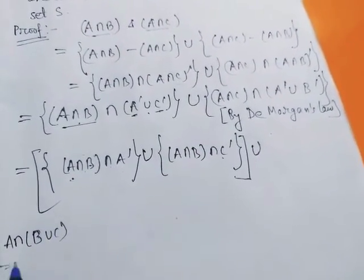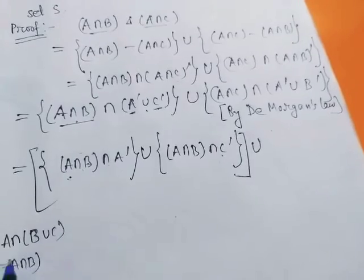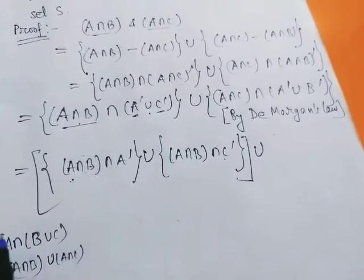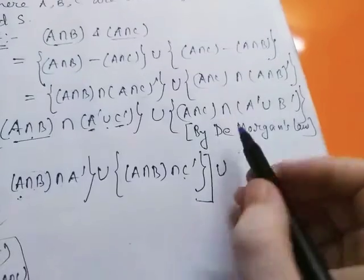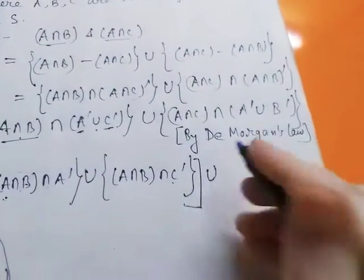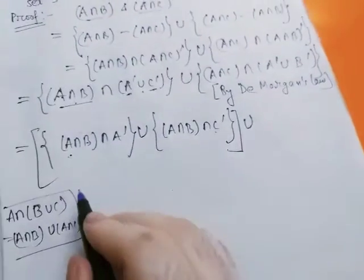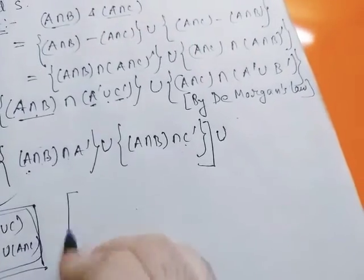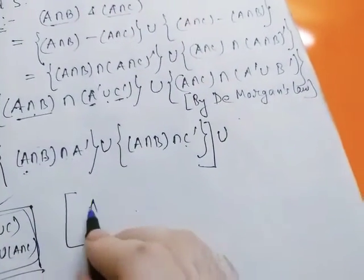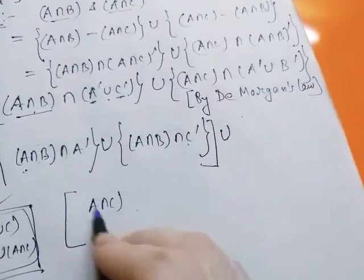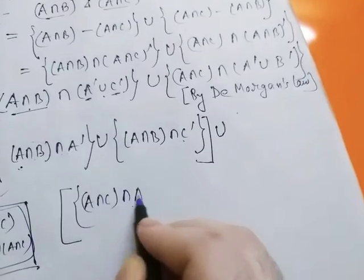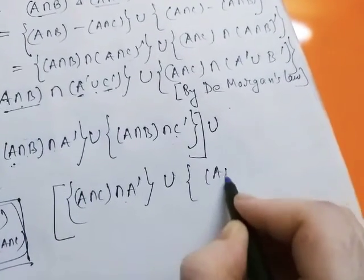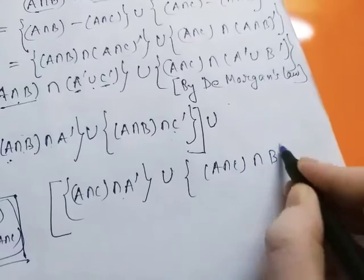By distributive law, A intersection B union C equals simply A intersection B union A intersection C. Now here we will also use this, so this will be A intersection C intersection A complement union A intersection B, and A intersection C intersection B complement.